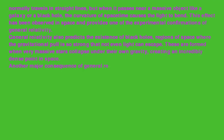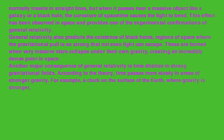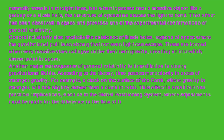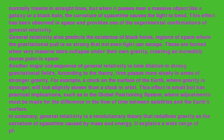Another major consequence of general relativity is time dilation in strong gravitational fields. According to the theory, time passes more slowly in areas of stronger gravity — a clock on the surface of the Earth will tick slightly slower than a clock in orbit. This effect has practical implications, such as in the global positioning system, where adjustments must be made for the difference in the flow of time between satellites and the Earth's surface. In summary, general relativity redefines gravity as the curvature of space-time caused by mass and energy, explaining phenomena from the bending of light to the existence of black holes.